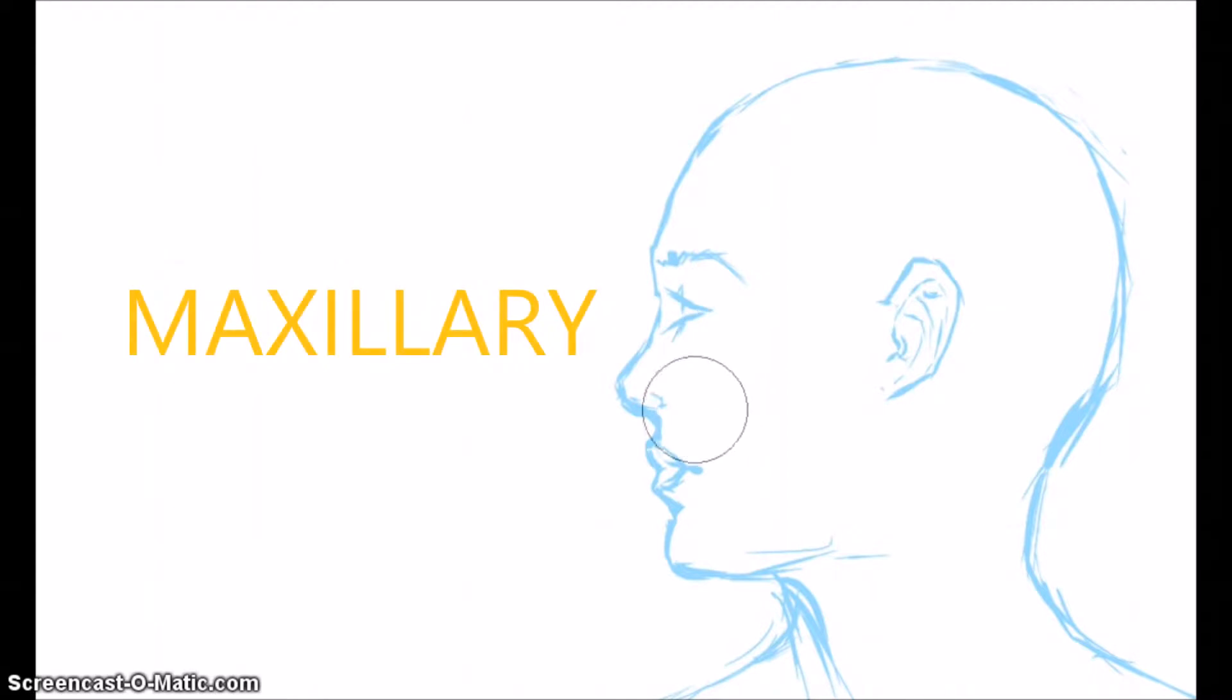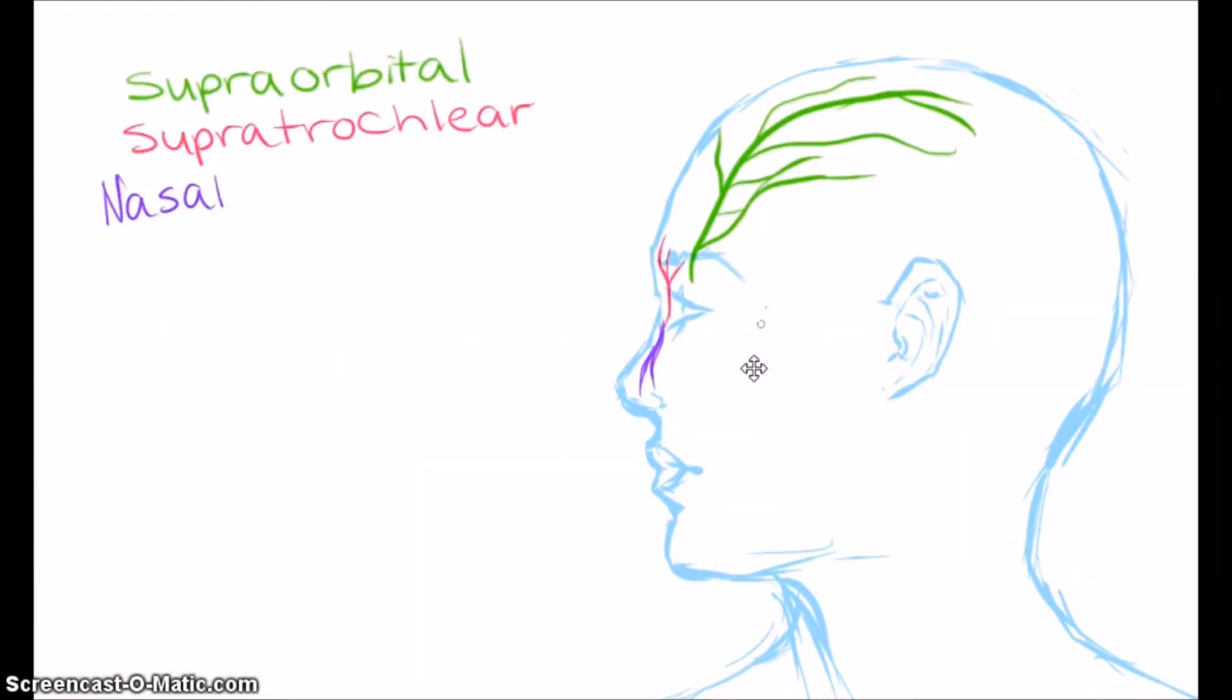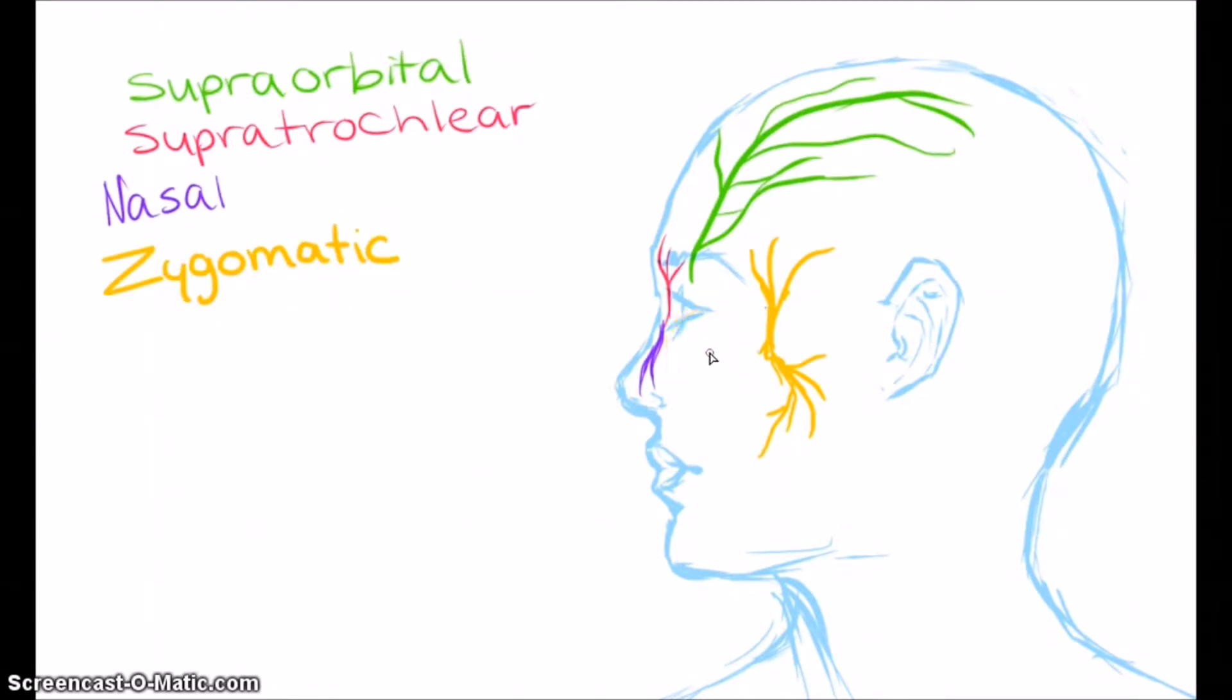The second part is the maxillary, which affects the middle one-third of the face and divides into two parts. The zygomatic, which affects the side of the forehead, temple, and cheek. The infraorbital, which affects the lower eyelid, the side of the nose, the upper lip, and the mouth.